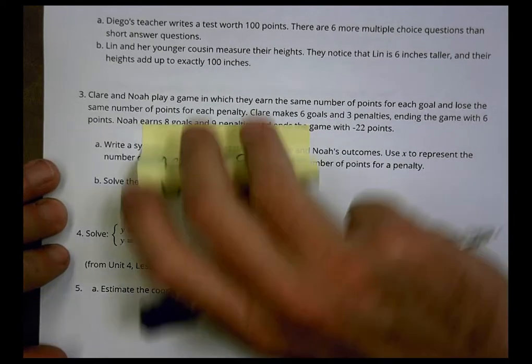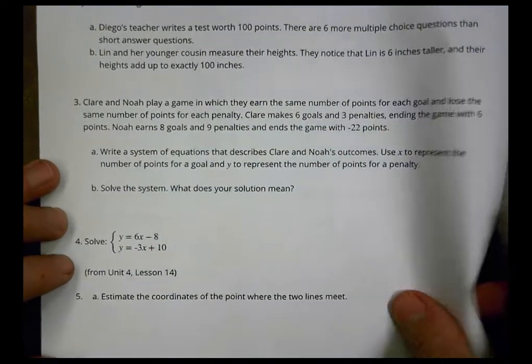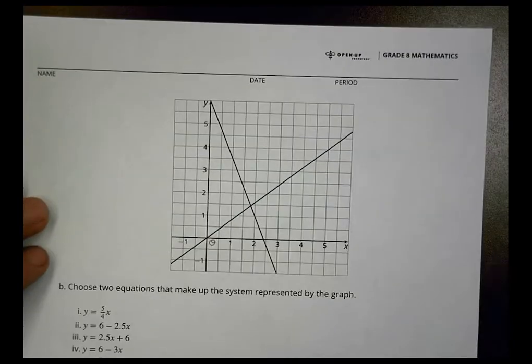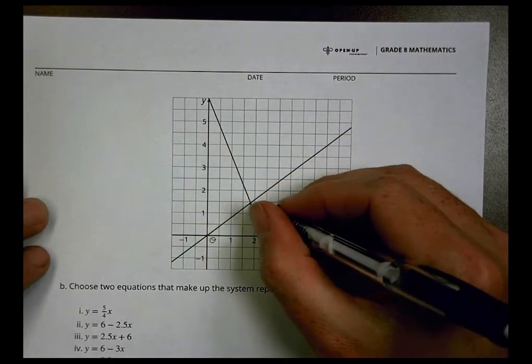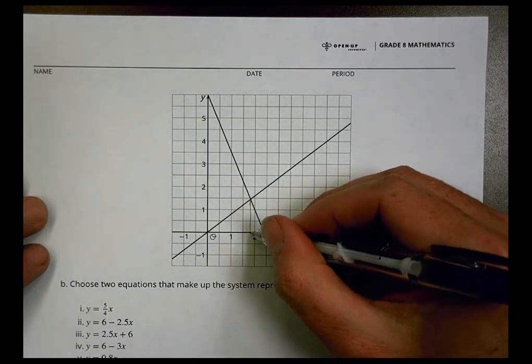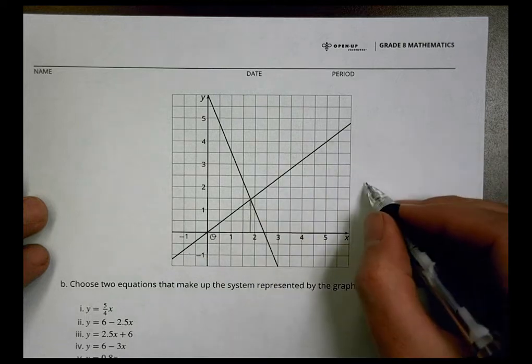It says first of all to estimate the coordinates of the point where the two lines meet. Again, we're just going to estimate where these are meeting up at. I look here and notice that it seems to meet when I look at it here. For x-coordinate it's a little more than half, so maybe one and three-fourths or so for the x.